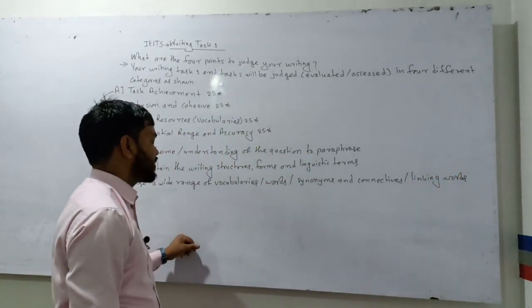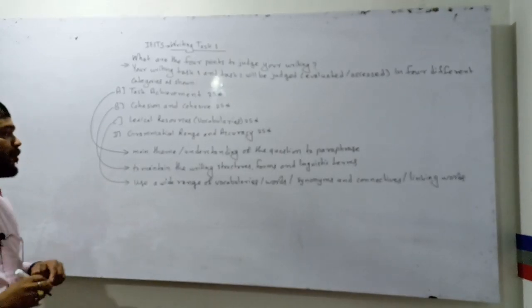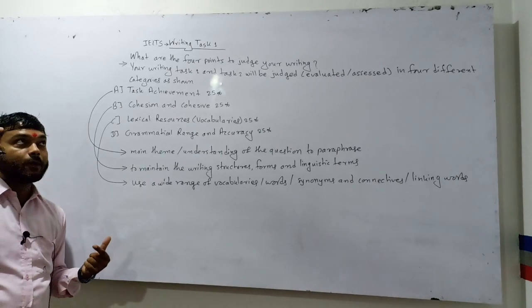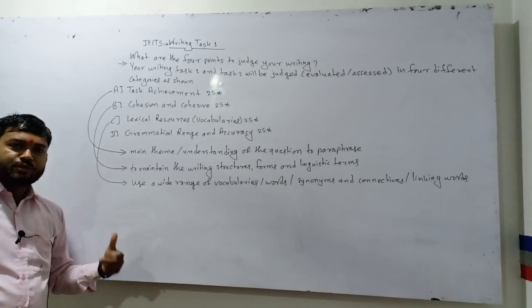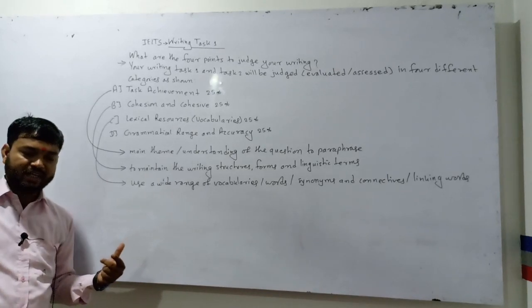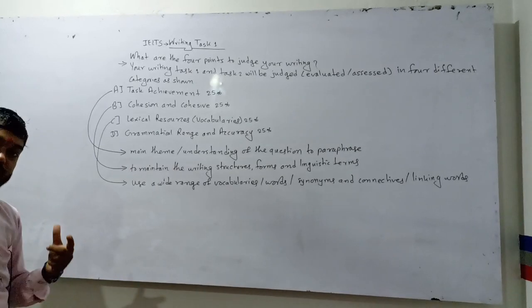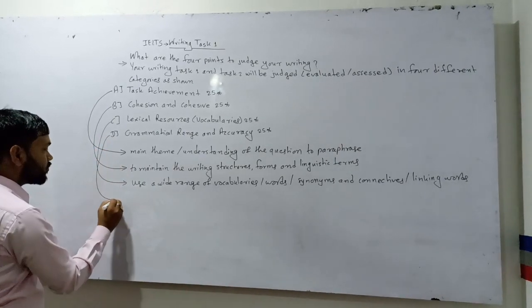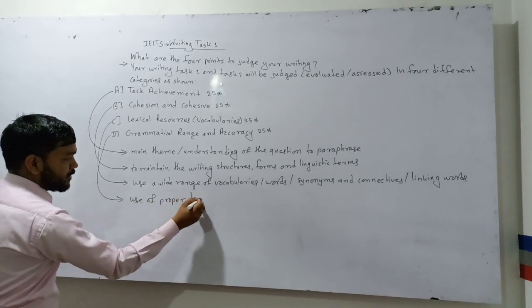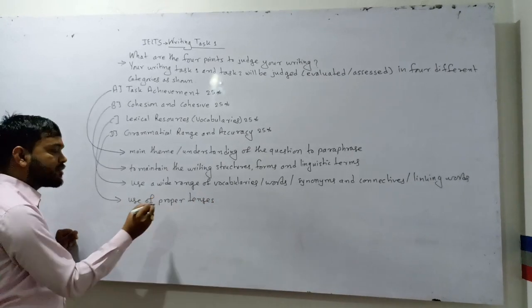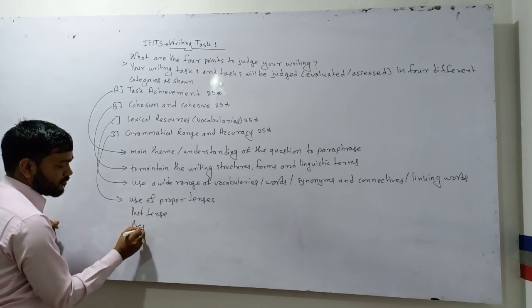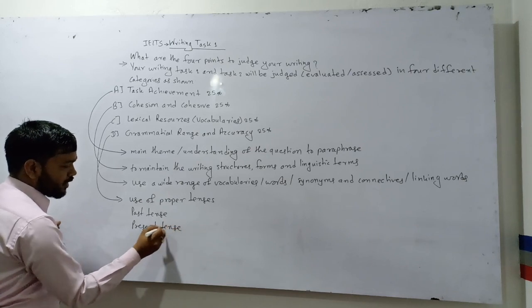The next is Grammatical Range and Accuracy. When you are describing any particular topic or writing about data, past history, present activities, or future plans, you should always focus on grammar - that means the tenses. Use proper tenses like past tense, present tense, and future tense.